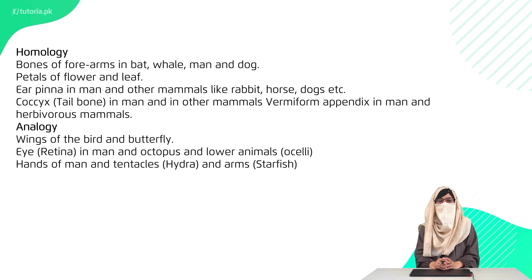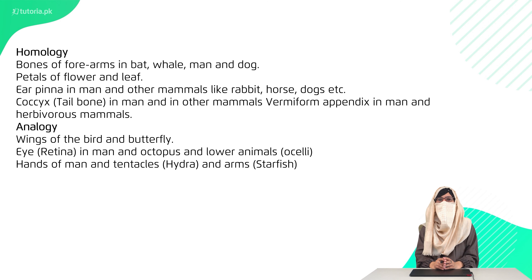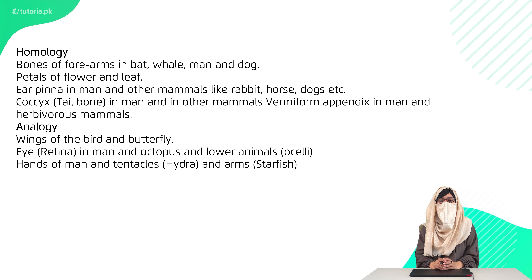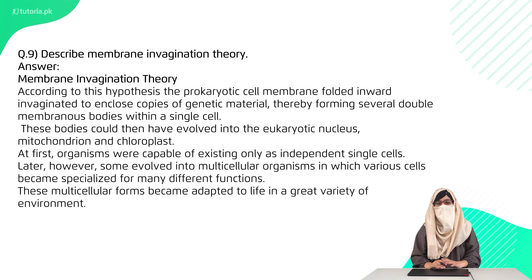More homologous examples include: the bones of the forearms in bats, whales, mammals and dogs; petals of flowers and leaves; and the ear pinna in humans and other mammals such as rabbits, horses and dogs. Analogous organs include: wings of birds and butterflies; the eye retina in humans and octopus; and the head, tentacles and arms of starfish.